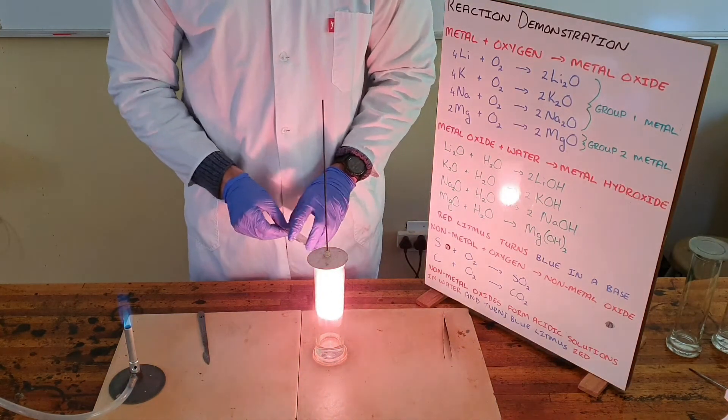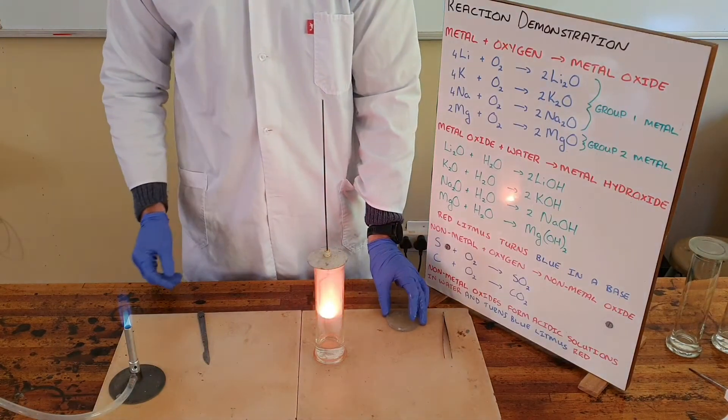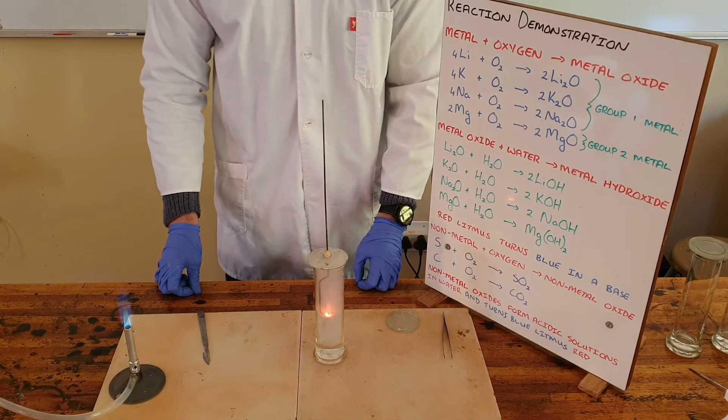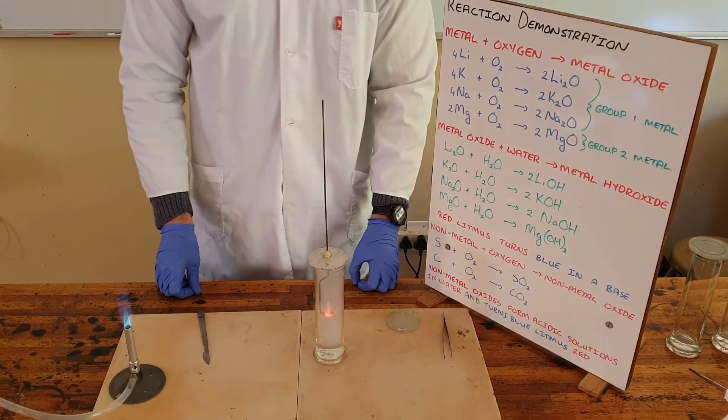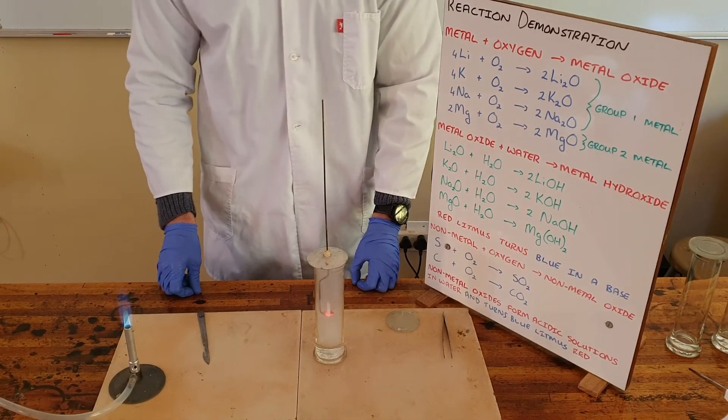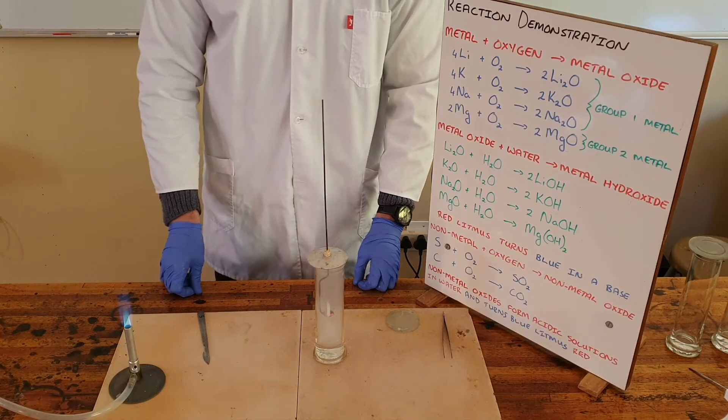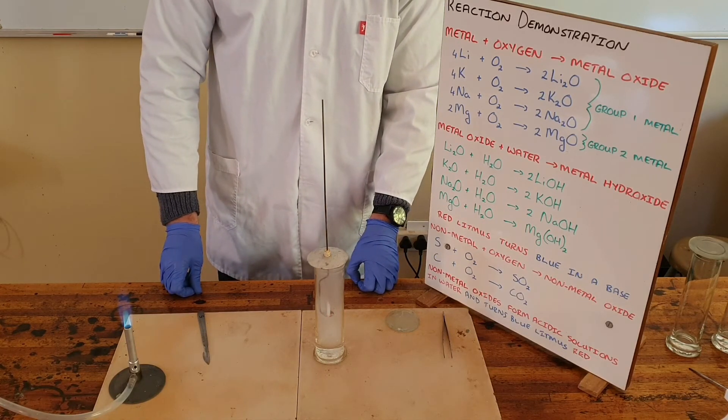We can see that the reaction happens far faster—there's a far more rapid reaction in oxygen. That is because the pure oxygen allows the reaction to proceed much faster. We can see that there is a white smoke formed, and that also forms along with the metal oxide that is formed, the lithium oxide.